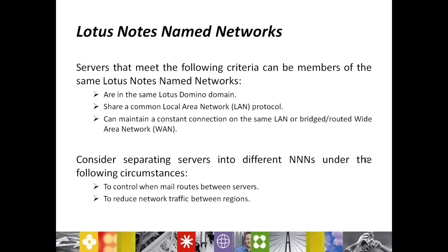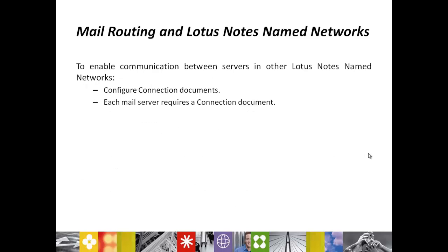Consider separating servers into different NNNs under the following circumstances: to control when mail routes between the servers, and to reduce the network traffic between the regions. To enable communication between servers in other Lotus Notes Name Networks, you need to configure a connection document. Each mail server requires a connection document.